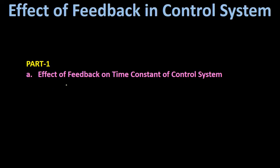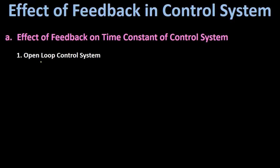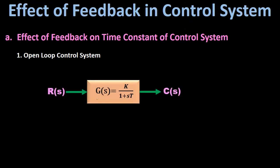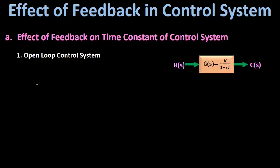In the first part of this lecture series we are going to discuss the effect of feedback on the time constant of a control system. First we will take the open loop control system. This is the block diagram representation of the open loop control system. Here R(s) is the input, C(s) is the output, and G(s) is the forward path transfer function which is equal to K divided by (1 + sT). The overall transfer function C(s)/R(s) equals G(s) = K/(1 + sT).